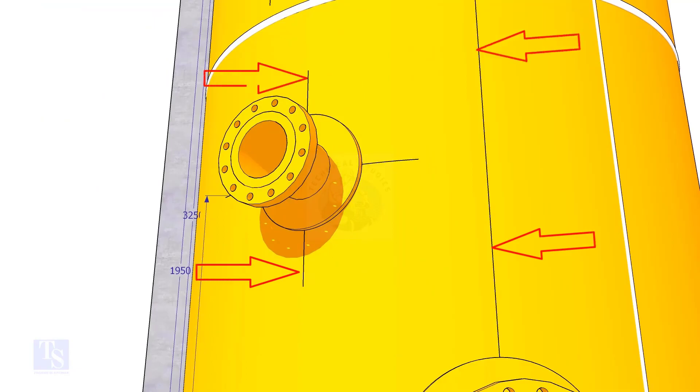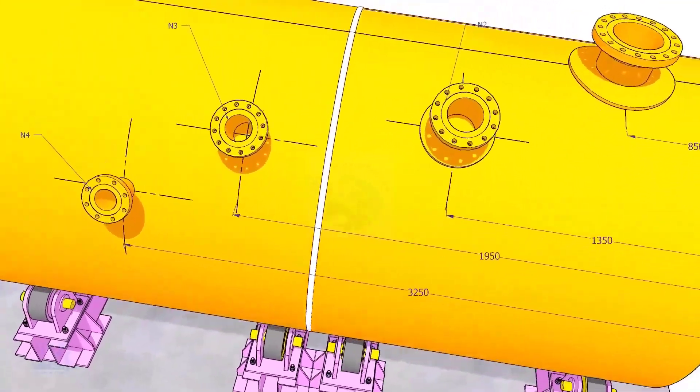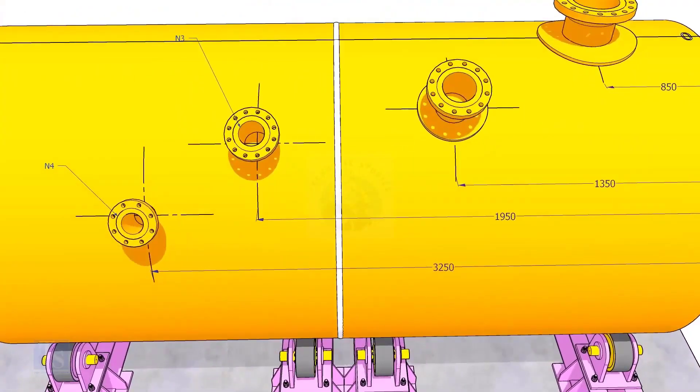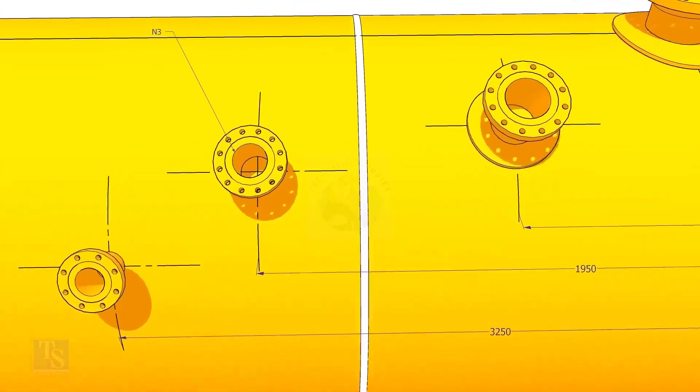Mark this dimension at two locations as shown and draw a line. Draw an arc of 1350 millimeters from the edge of the shell, intersecting this line. This point is the center of nozzle N2.